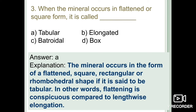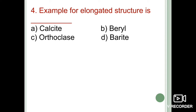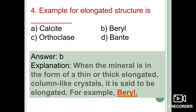Next question: what is an example of an elongated structure — calcite, beryl, orthoclase, or beryl? When a particular mineral is in the form of a thin or thick elongated columnar-like structure, it is said to be elongated in form. The best example is beryl. These can also be known as columnar structures; tourmaline is another example. The correct option is option B: beryl.